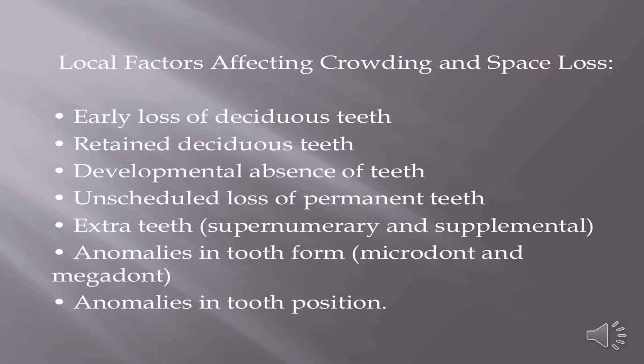Local factors affecting crowding and space loss include: early loss of deciduous teeth, retained deciduous teeth, developmental absence of teeth, unscheduled loss of permanent teeth, extra teeth including supernumerary and supplemental teeth, anomalies in tooth form such as microdontia and megadontia, and anomalies in tooth position.